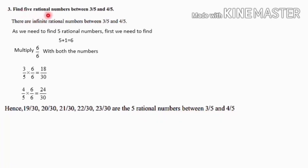To recap: we needed 5 rational numbers, so 5 + 1 = 6. We multiplied 6/6 with both numbers: 3/5 × 6/6 = 18/30, and 4/5 × 6/6 = 24/30. Starting from 19 onwards, the 5 rational numbers are 19/30, 20/30, 21/30, 22/30, and 23/30.